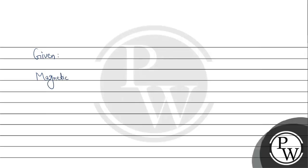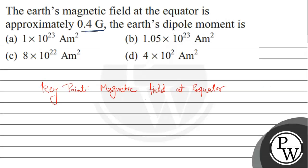Magnetic field at equator B equal 0.4 into 10 power minus 4 Tesla, because 1 Gauss equal 10 power minus 4 Tesla.